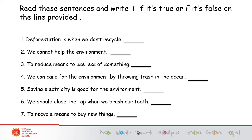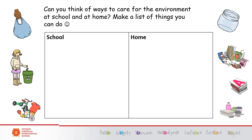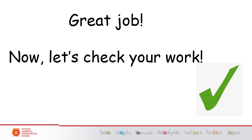There is a little practice for you: read these sentences and write T if it's true or F if it's false on the line provided. Can you think of ways to care for the environment at school and at home? Make a list of the things you can do.